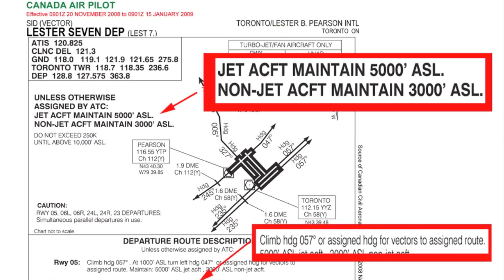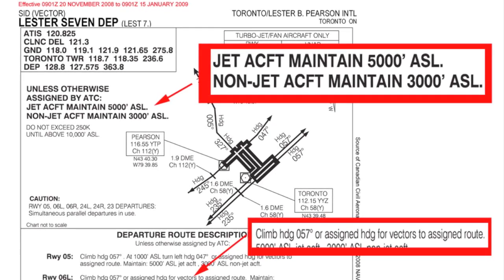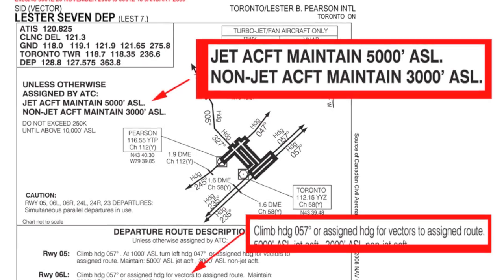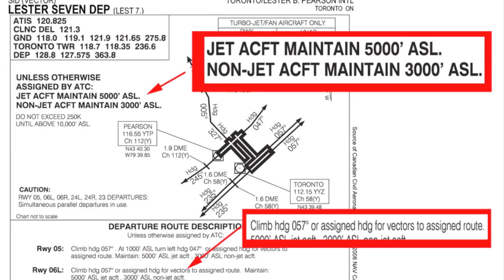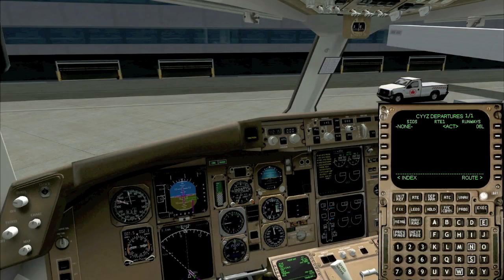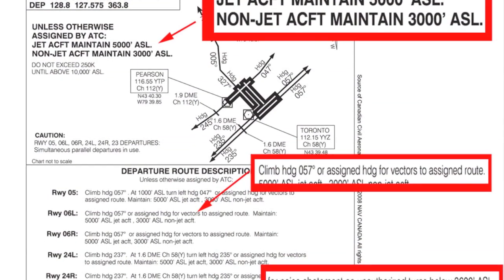The first is that there's a climb restriction for jets of 5,000 feet and for props of 3,000 feet. The second is that we should expect radar vectors en route. This is probably the biggest area of mistakes that pilots make when departing Toronto — that they begin their turn en route before being assigned the vector by the controller. The chart requires you to fly the departure heading, maintain the climb restriction or higher altitude if provided by the controller, but not make any turns until you've been given a vector.